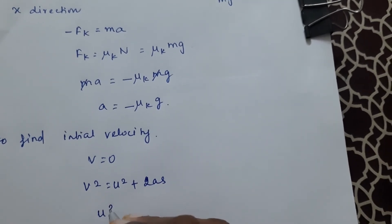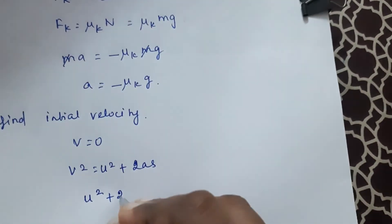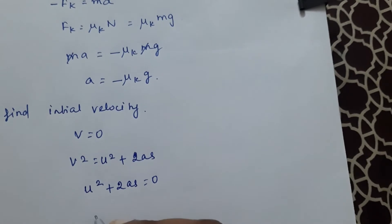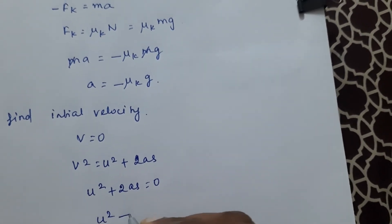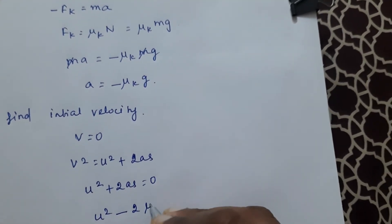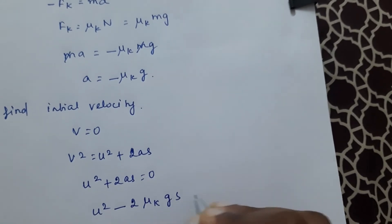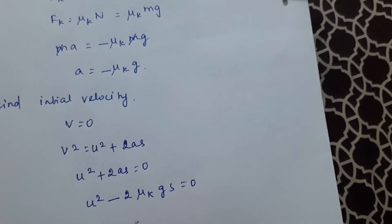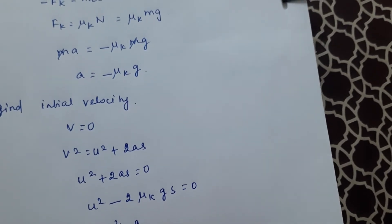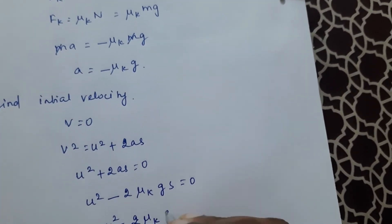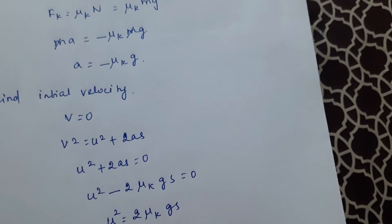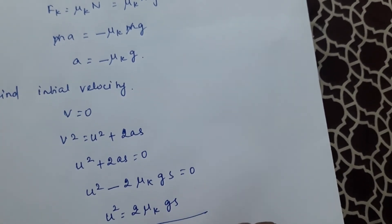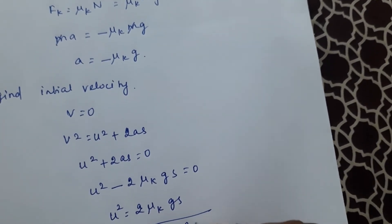u² plus 2as is equal to zero. u² minus 2 times μk g s is equal to zero. So u² is equal to 2 μk g s. u is equal to root of 2 μk g s.